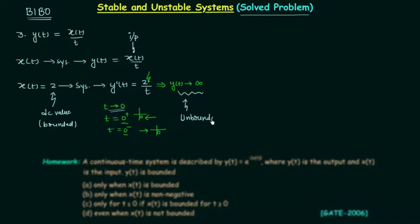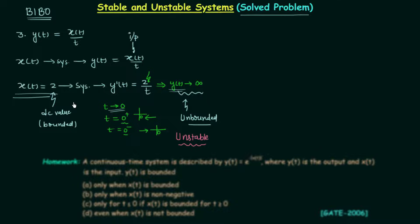The output is unbounded. So for bounded input we have unbounded output, therefore our system is unstable. Since we obtained an unstable result for a DC input, there is no need to check for other bounded signals — if the output is unbounded for even one type of bounded input, the answer is unstable.